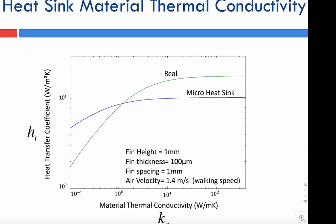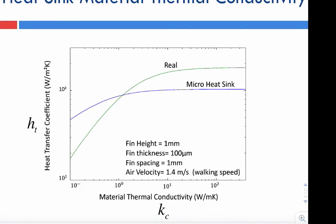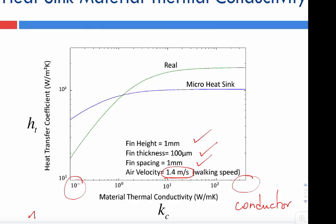What happens if we change the thermal conductivity of the heat sink material? A plot shows heat transfer coefficient for a constant air velocity of 1.4 meters per second — roughly walking speed — with fin height 1 mm, fin thickness 100 micrometers, and fin spacing 1 mm. The horizontal axis is thermal conductivity, ranging from 0.1 (thermally insulating) to hundreds of watts per meter Kelvin (very good conductor).